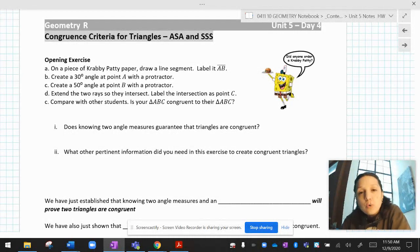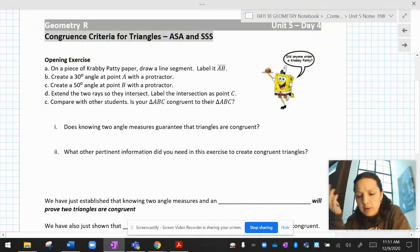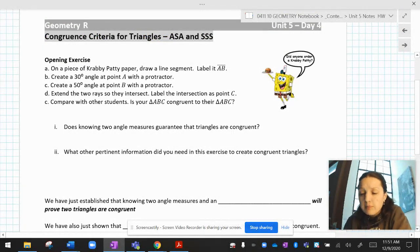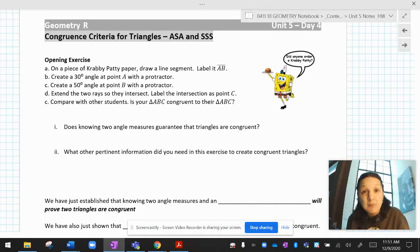But what I want to show you is that if you have ASA, you only can get one triangle out of that. Now, the problem is we have this activity up here, which is really hard to do digitally, but I'm going to try anyway. It says on a piece of Krabby Patty paper, draw a line segment, label it AB. If you were in class, I would give you a piece of paper that's literally called patty paper because it goes in between hamburger patties when you freeze them. But I can't hand that to you.